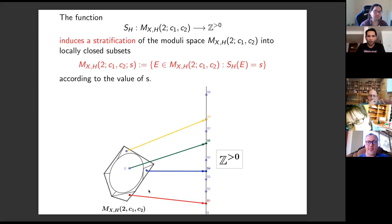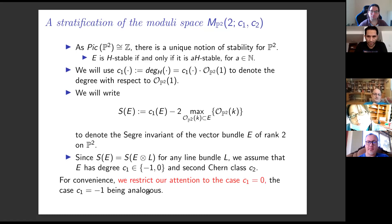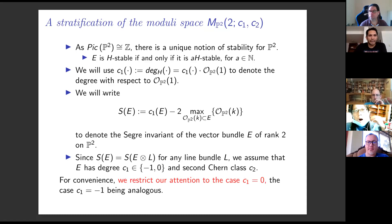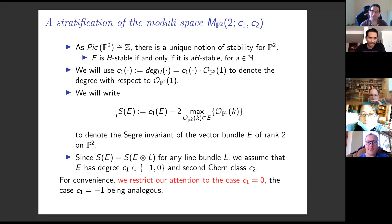I will now study this stratification for the moduli space of rank two vector bundles on the projective plane. For vector bundles on the projective plane, there is a unique notion of stability with respect to the line bundle O(1). I will denote the degree of the vector bundle as its first Chern class and denote the Segre invariant by x. Since the Segre invariant does not change under tensor products with line bundles, we can assume the degree of the vector bundle is equal to minus one or zero. I will only study the case when the degree is equal to zero.